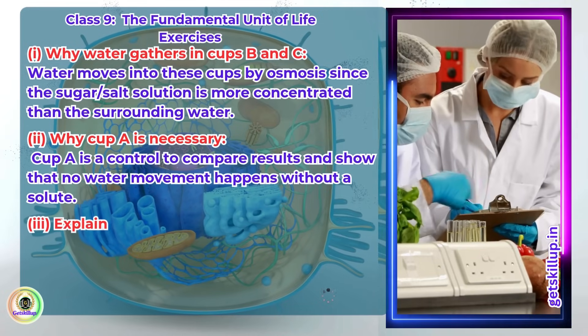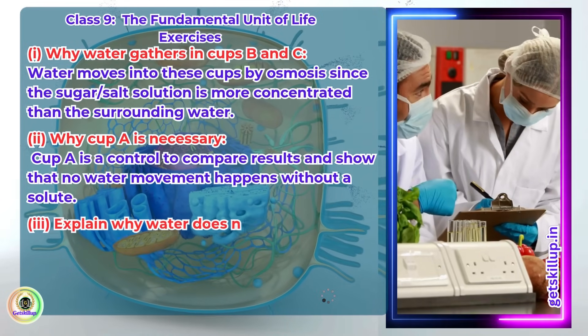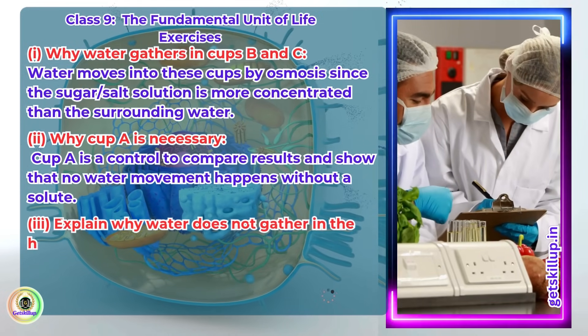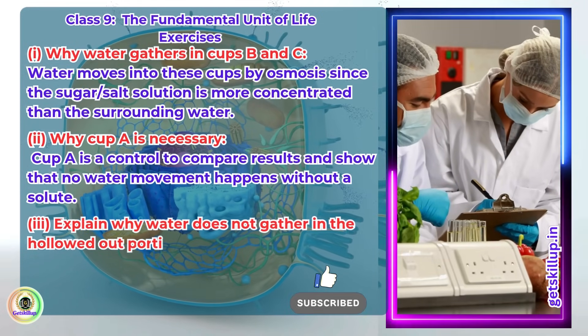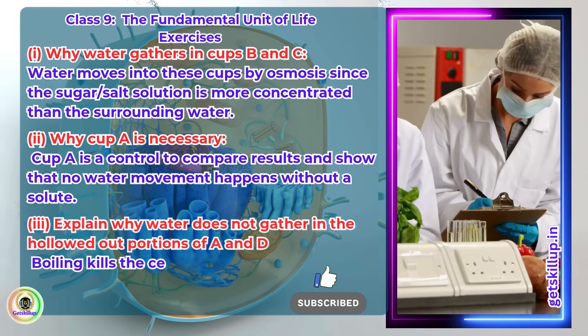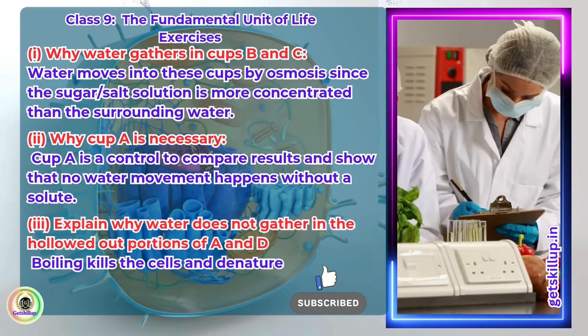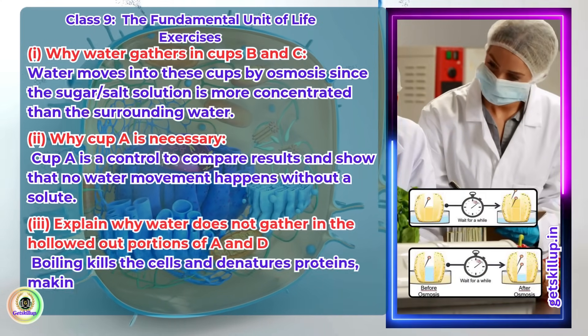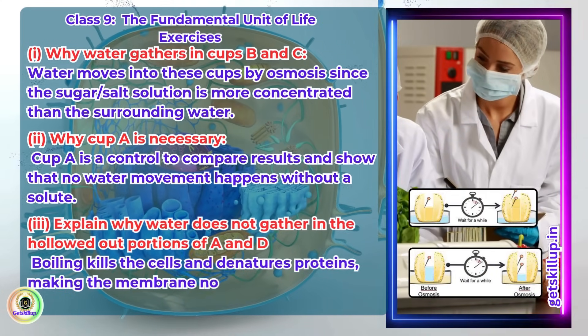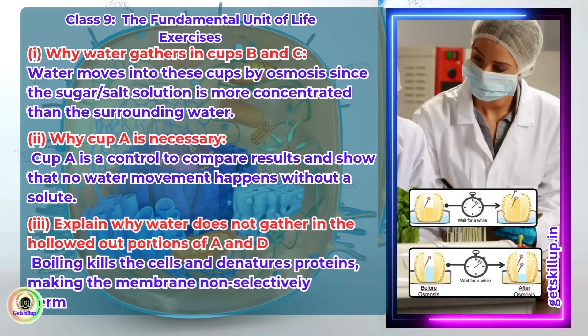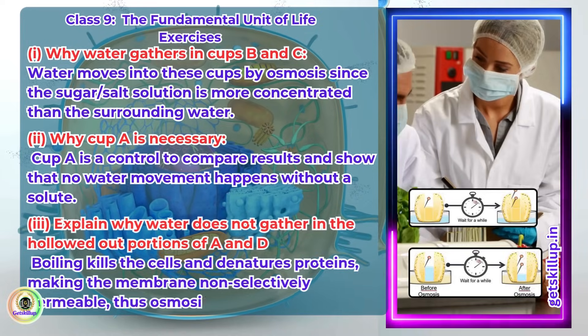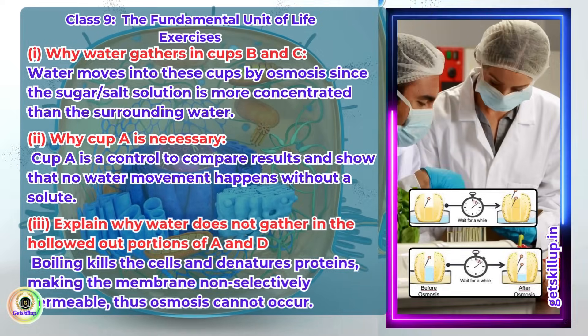Explain why water does not gather in the hollowed out portion of A and D. Boiling kills the cells and denatures proteins, making the membrane non-selectively permeable, thus osmosis cannot occur.